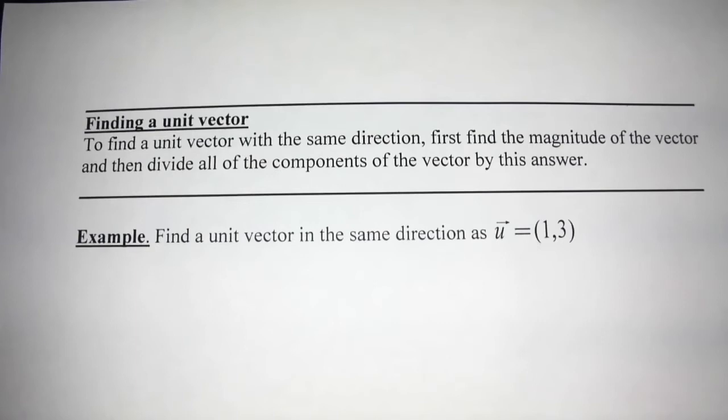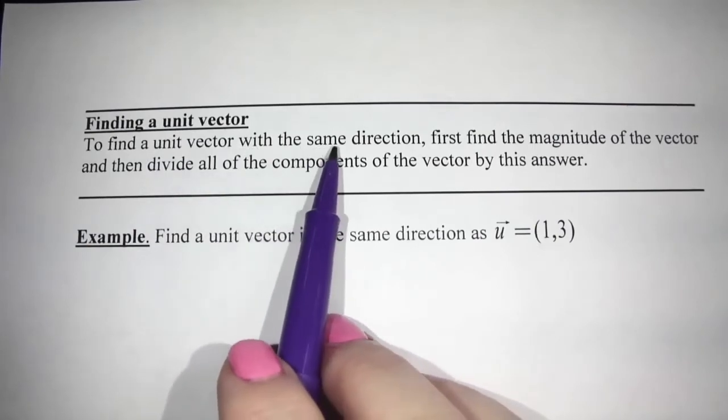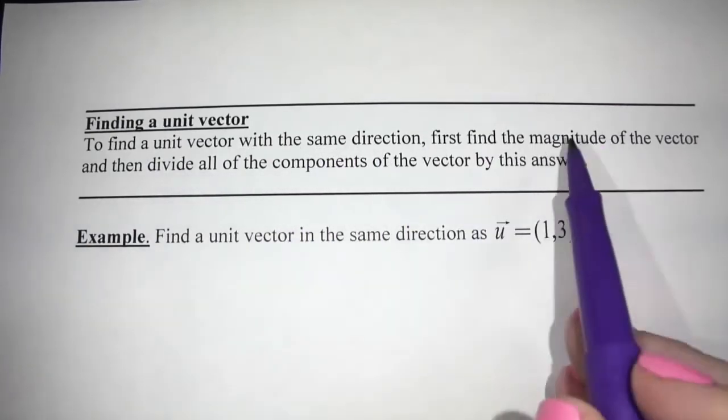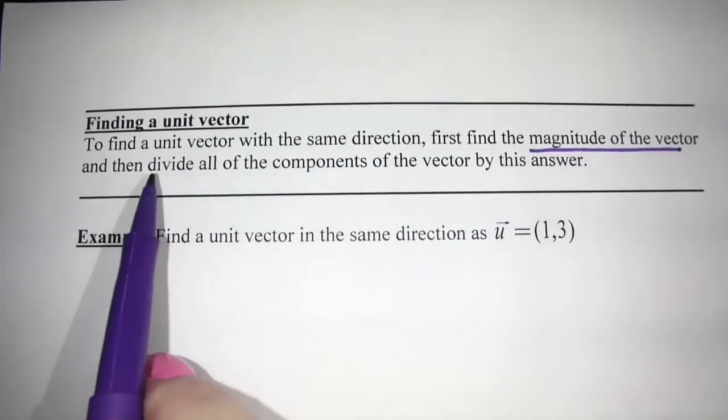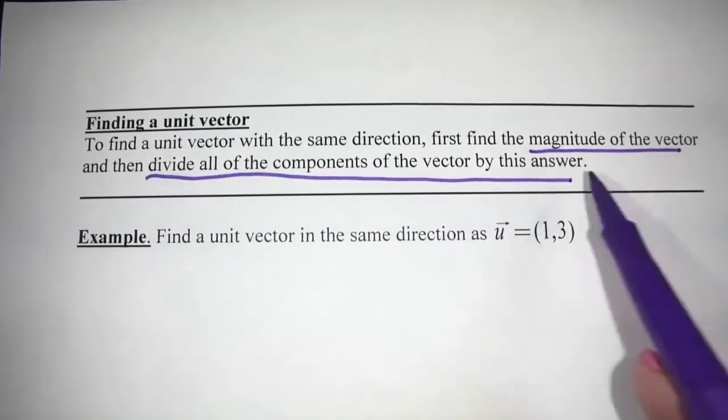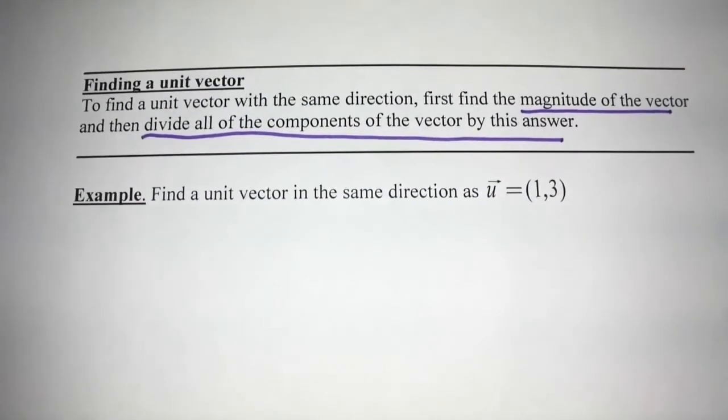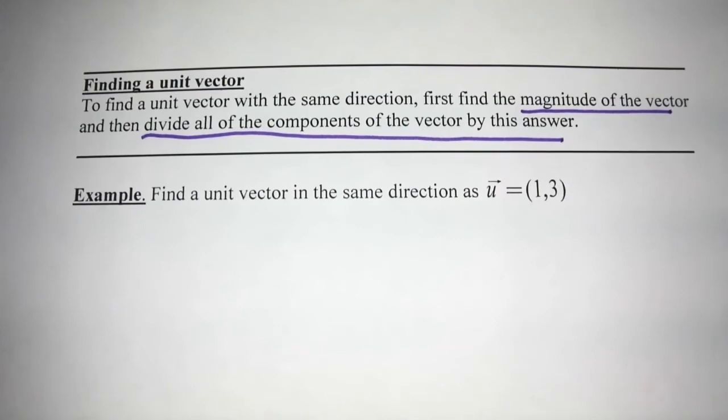The next thing we talk about is finding a unit vector. And so to find a unit vector, to find a unit vector with the same direction, first find the magnitude of the vector, and then divide all the components of the vector by this answer.